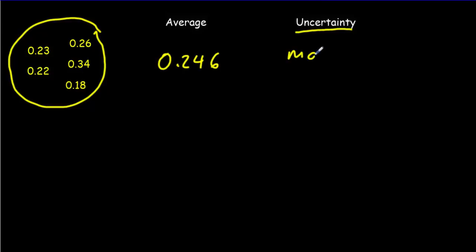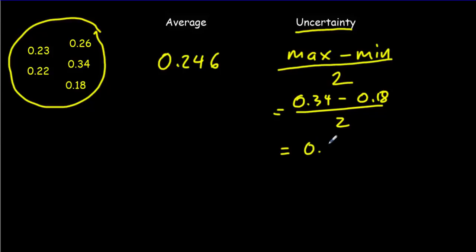To work out the uncertainty, just take the maximum value, the highest value in the range, and subtract off the minimum value, the lowest value in the range, and then divide by 2. So in this case, we'd have 0.34 minus 0.18 divided by 2, which is going to give you 0.08.